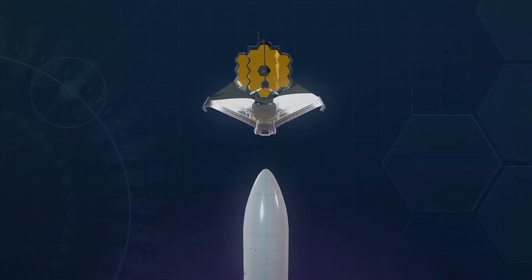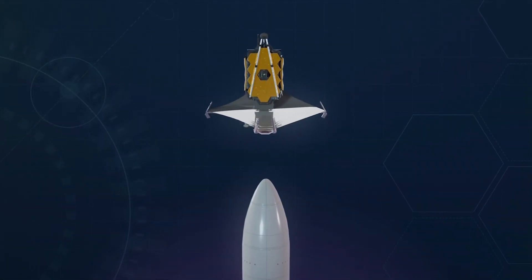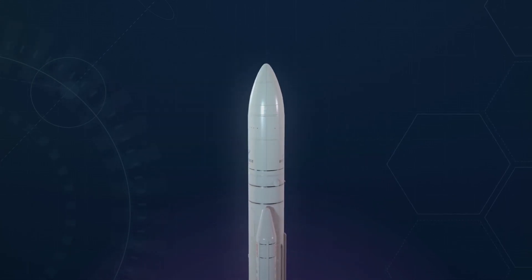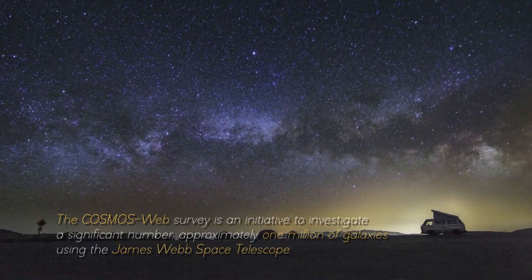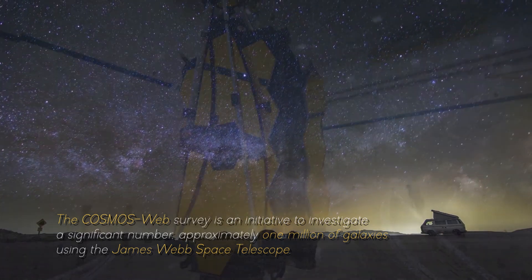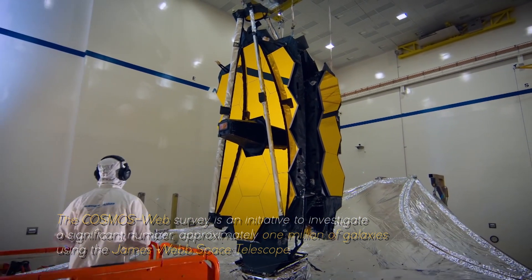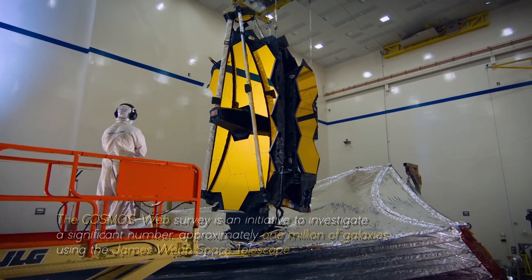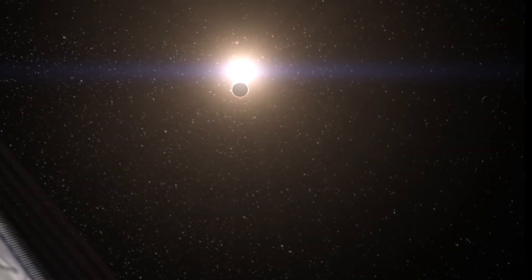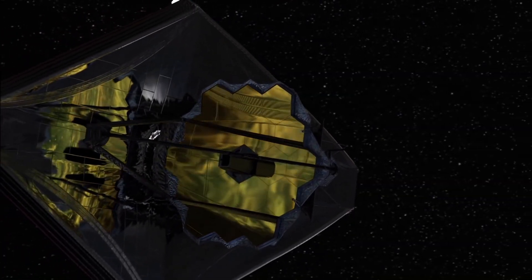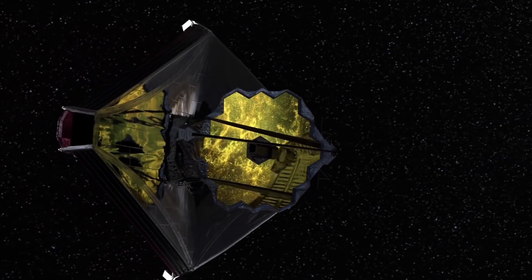What is the Cosmos Web Survey project and how is the James Webb Space Telescope involved in this project? The Cosmos Web Survey is an initiative to investigate a significant number, approximately one million, of galaxies using the James Webb Space Telescope. This telescope has four scientific instruments that make it possible to observe the infrared light of the universe with unprecedented resolution and sensitivity.